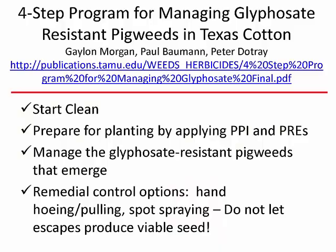A weed control guide put out by Morgan and others suggests a four-step program to managing glyphosate-resistant pigweeds in Texas cotton. This four-step program includes starting clean, being prepared for planting by applying pre-plant and pre-emergence herbicides, managing glyphosate-resistant weeds as they emerge, and lastly some remedial control options including spot spraying and hand removal to ensure that any escaped weeds do not produce seed for future generations.